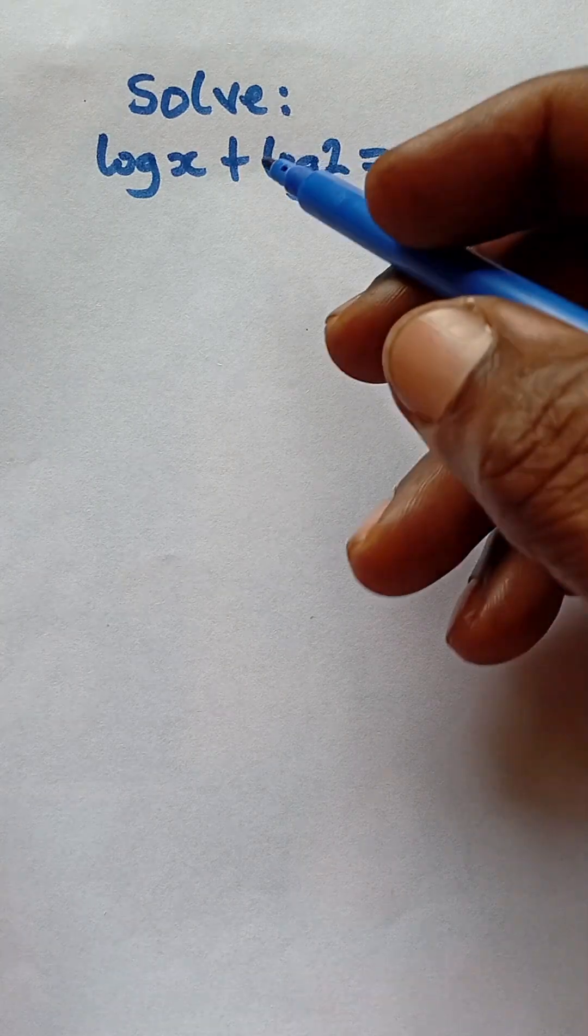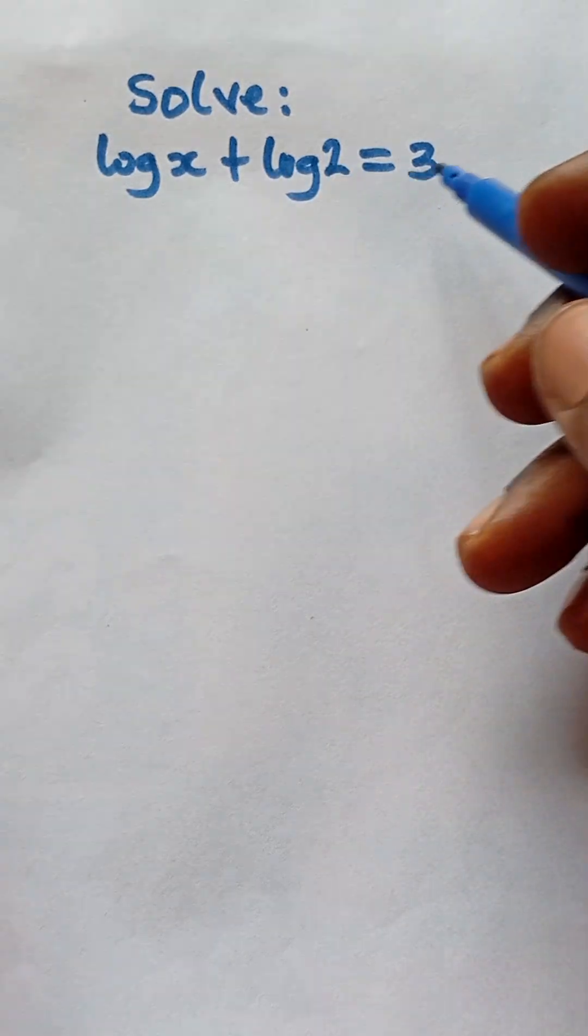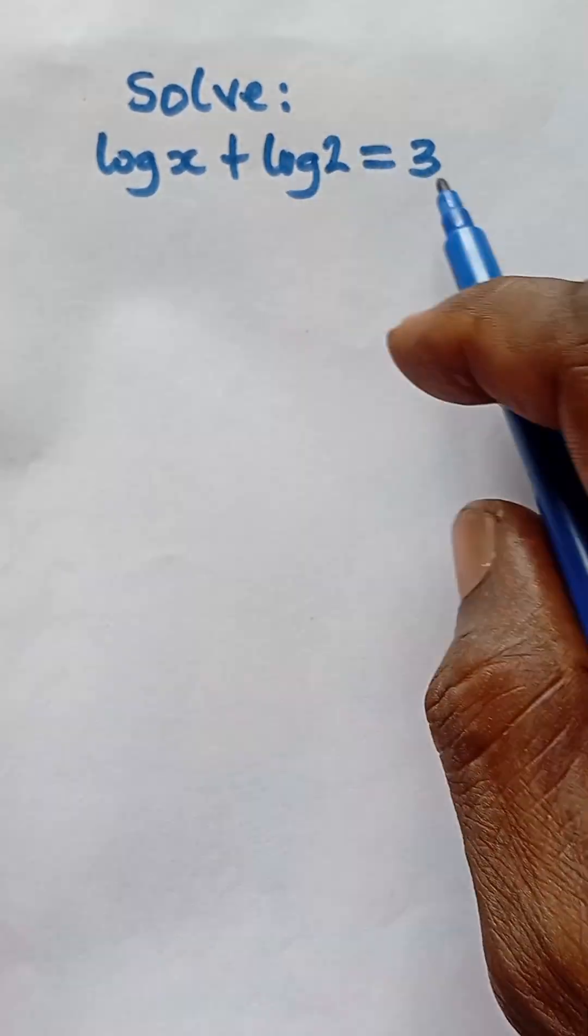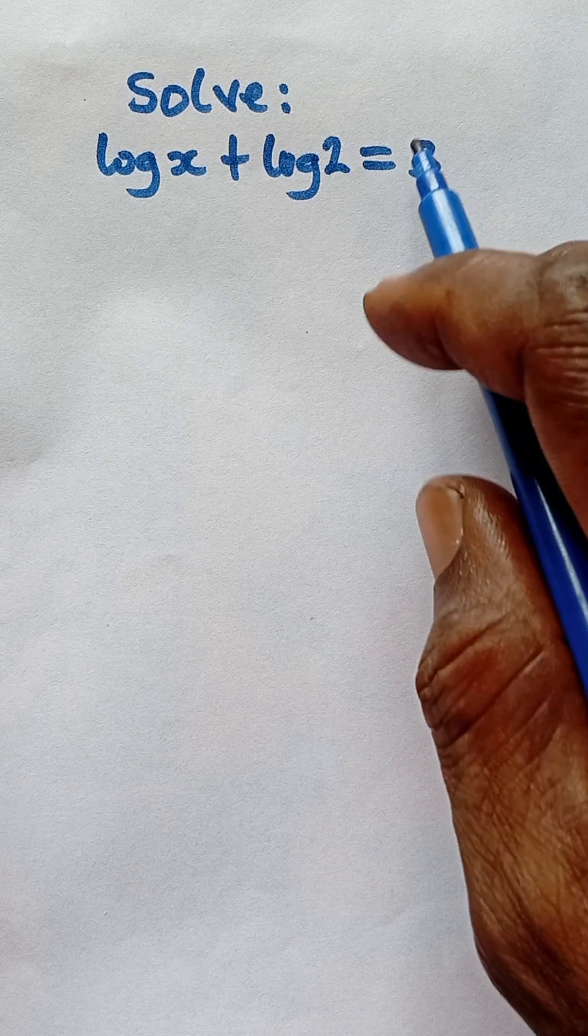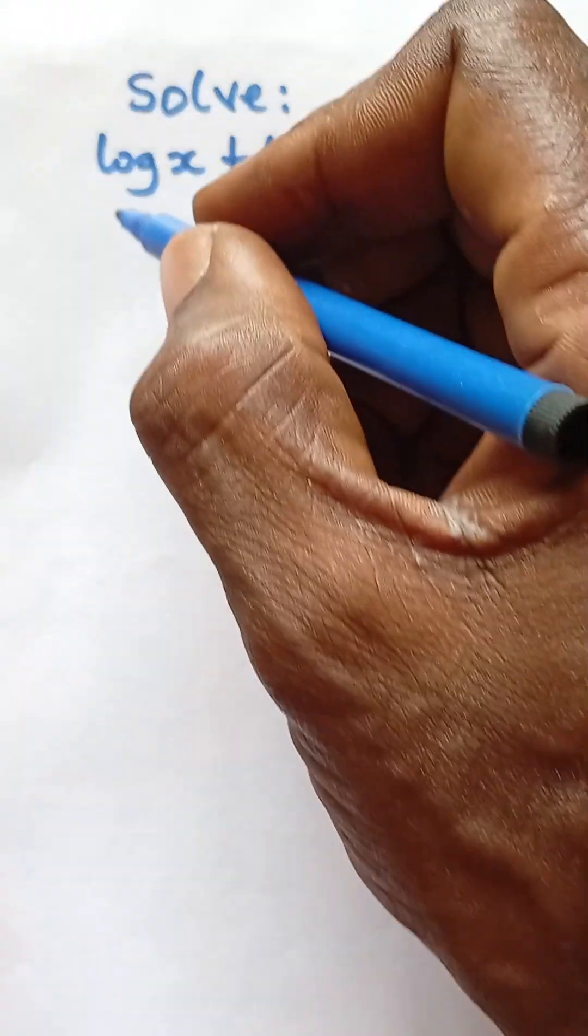Alright, the question here says solve log x plus log 2 is equal to 3. Now if we check, this is in log and this one is in log, but the number here is not in log. So the first thing for us to do is to express this in log.